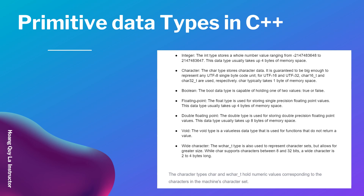The integer data type usually takes up four bytes of memory space. The second one is the character — the char type stores character data. It is guaranteed to be big enough to represent any UTF-8 single-byte code unit. For UTF-16 and UTF-32, char16 and char32 are used respectively. Char typically takes one byte of memory space.